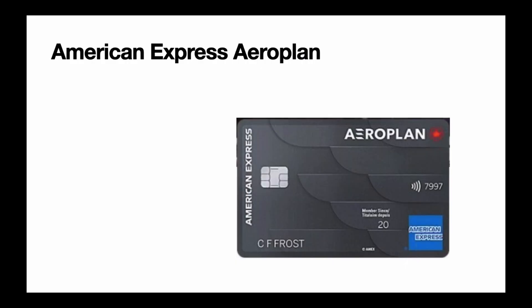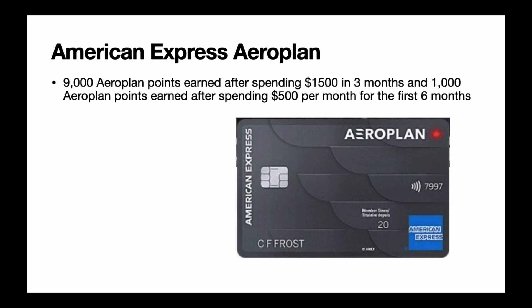The first credit card is the American Express Aeroplan card. This card gives you 9,000 Aeroplan points after spending $1,500 within the first three months, and 1,000 Aeroplan points after spending $500 per month for the next six months. This is a core Aeroplan credit card and there's a $120 annual fee.